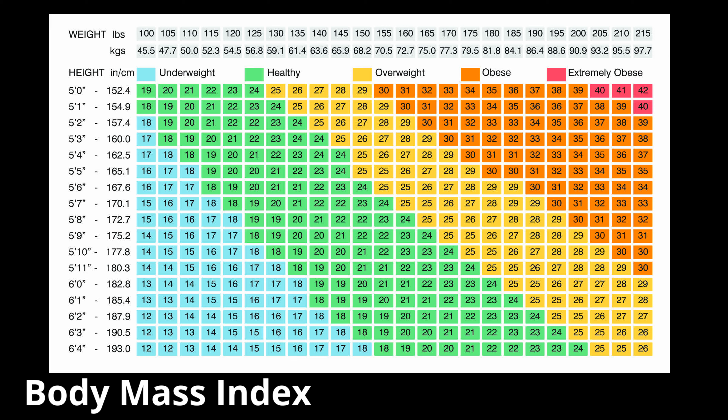However, this isn't a brilliant measure for sports performers because it doesn't take into account muscle mass. A weightlifter, rugby player, or perhaps a boxer who has a large amount of muscle is likely to come out on the BMI scale as extremely obese — but this doesn't tell the whole picture, because they might be perfectly healthy and actually at the optimum weight for their sport. They come out as extremely obese simply due to their high muscle mass.